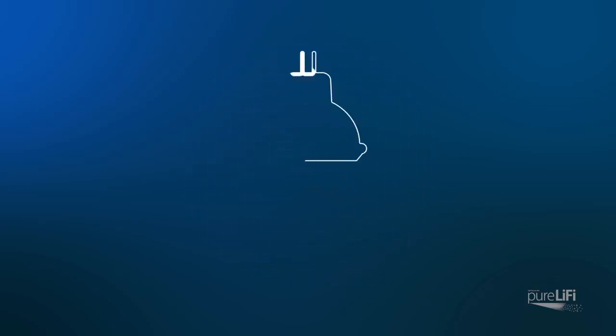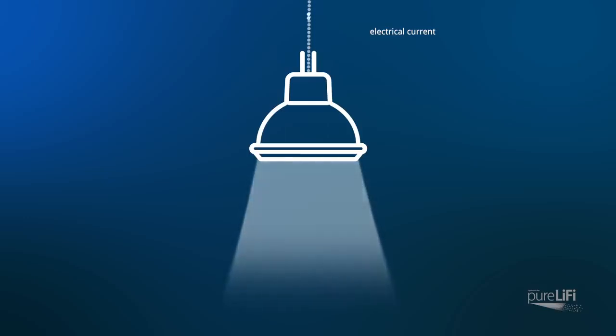We all know how a light bulb works. When an electrical current is applied to an LED light bulb, a constant stream of light is emitted from the bulb, which we see as illumination.